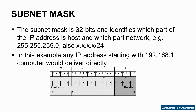So if I was this machine — 192.168.1.13 — and I was trying to talk to a machine that was 192.168.1.27, I could see that the network address is the same for both of us. The first three parts are both 192.168.1 because the mask is 255.255.255, so our network addresses are the same and we're on the same network. I can talk to it directly.